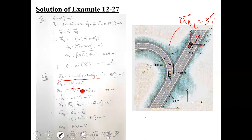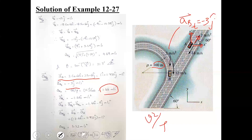The normal component AB normal has a magnitude of v squared over rho. With v equal to 12 meters per second and rho equal to 100 meters, 12 squared over 100 gives 1.44 meters per second squared. The normal component is always directed from the particle towards the center of curvature, which in this figure is towards the negative x-axis. So AB normal equals minus 1.44i, and the total acceleration vector AB equals minus 1.44i minus 3j meters per second squared.